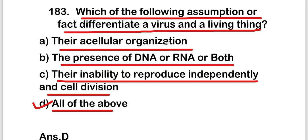All these features differentiate a virus from a living thing: viruses have acellular organization, the presence of DNA, RNA, or both, and their inability to reproduce independently and by cell division. These are all characteristics of viruses which are different from living things.